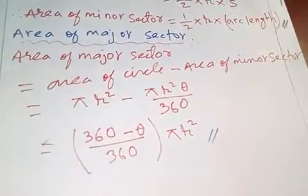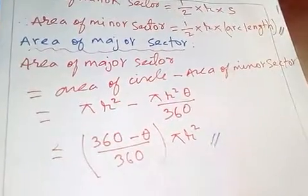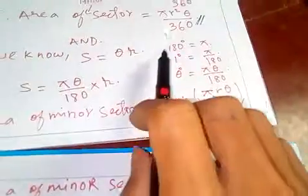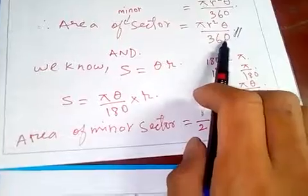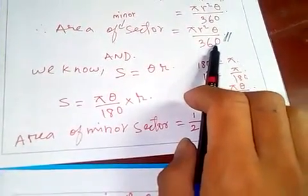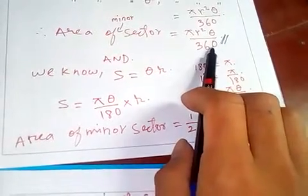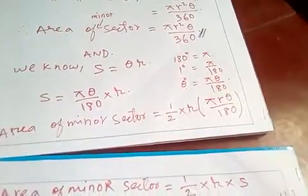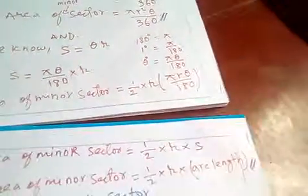Simplifying, the area of the major sector equals (360 minus θ) over 360 times π r². So this is the area of the major sector, and the earlier formula gives the area of the minor sector. That's it for the area of sectors.